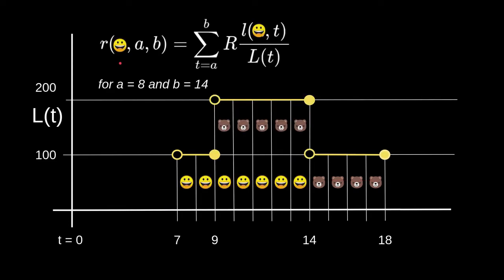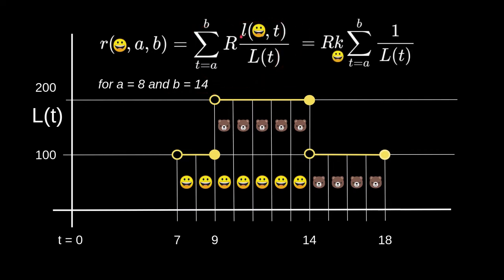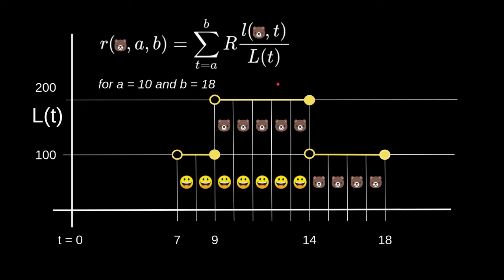When we graph the reward that Alice will receive between t equals 8 and 14, this is the equation that we derived. Since LUT for Alice between t equals 8 to 14 is a constant, we can pull this out, and the equation is simplified. We took out LUT since it is a constant for t equals 8 to 14. For the same reason, we can simplify the equation for Bob between t equals 10 and t equals 18.